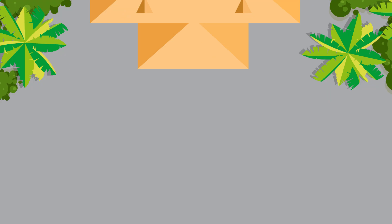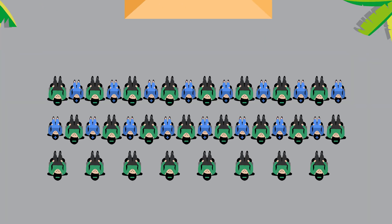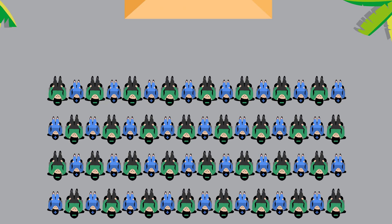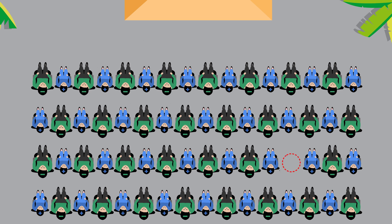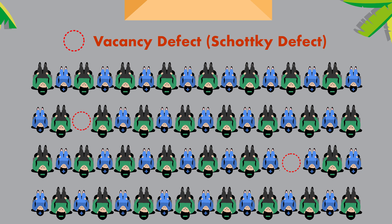In a school function, seats are arranged in a regular order for each student and their parents, where the parents are considered as an anion and the student as a cation. One of the student's parents and a student couldn't make their presence, and the place was vacant, which resembles the vacancy defect.